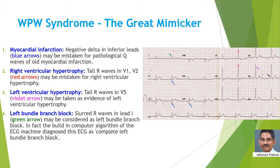Another differential diagnosis is left bundle branch block. Slurred R waves in lead 1 may be thought of as left bundle branch block. In fact, the computer algorithm of the ECG machine diagnosed this ECG as complete left bundle branch block.